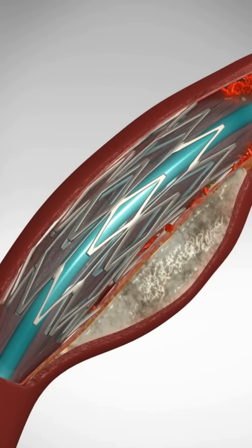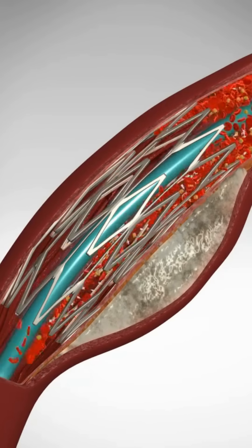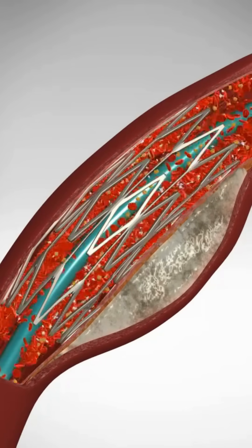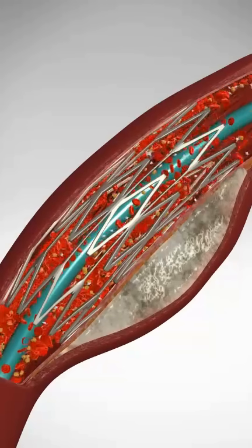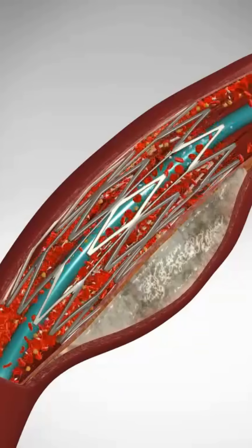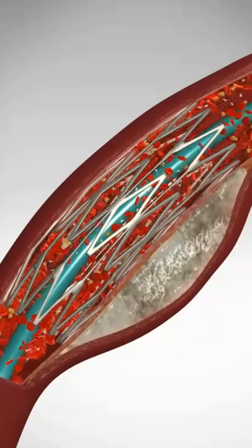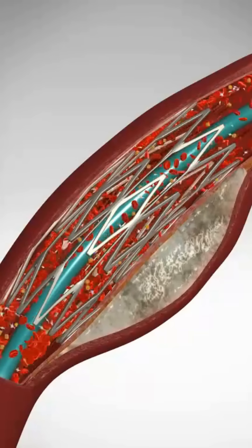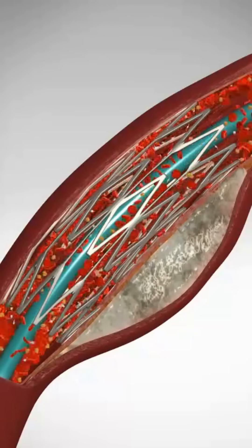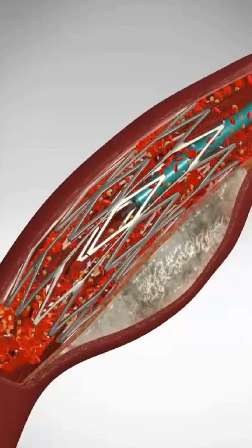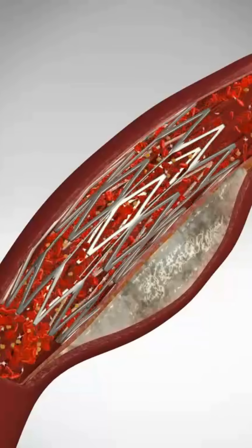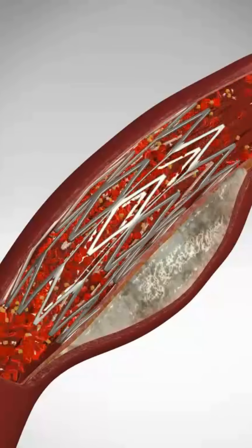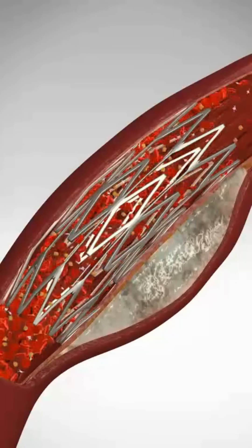Then the balloon is deflated, but notice the stent remains expanded. It's still holding the artery open. The catheter and balloon are pulled out of the artery and out of the body, but the stent remains in place inside the artery, keeping it open.